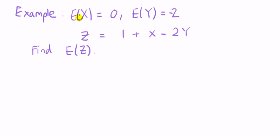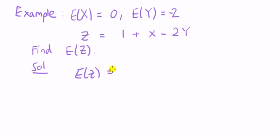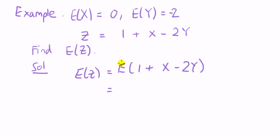Here's another example. The expected value of x is zero, the expected value of y is minus two, and z is equal to one plus x minus two y. We want to find the expected value of z. Taking the expected value of both sides, since the expected value is a linear operator, we take it right through the bracket, giving three terms: the expected value of one, plus the expected value of x, minus the expected value of two times y.